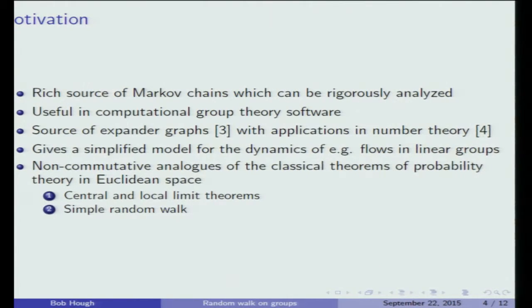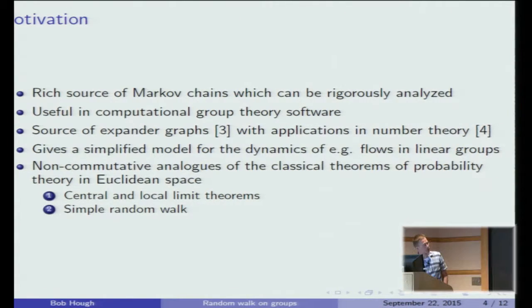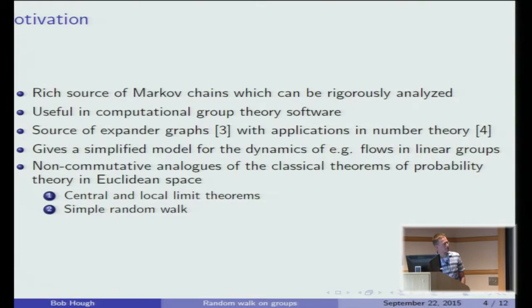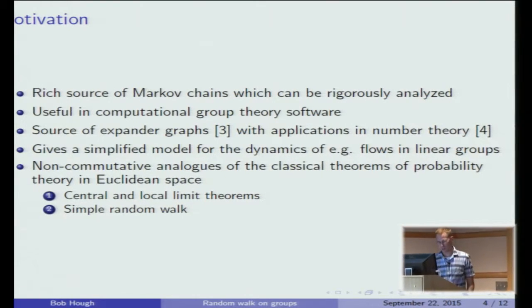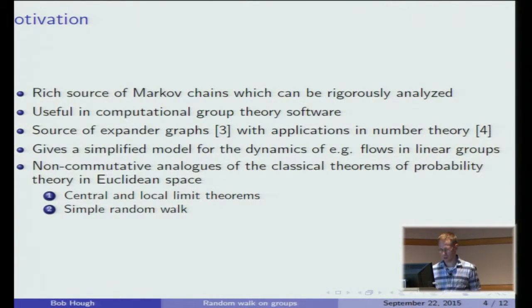We tend to be interested in unipotent flows on homogeneous spaces and groups. Sometimes tools from random walk can be useful in that case, or sometimes they give a simplified picture of what's going on. And maybe the most obvious motivation is that the classical theorems of probability take place on abelian groups. So studying repeated convolution on non-abelian groups is an interesting generalization. There tend to be limit and central limit theorems and simple random walk analogs.